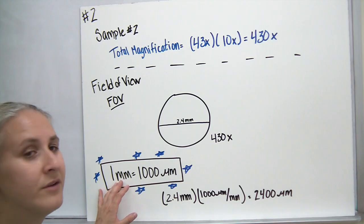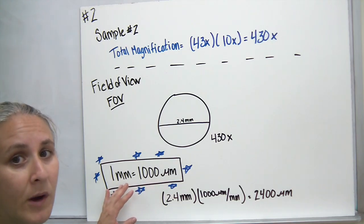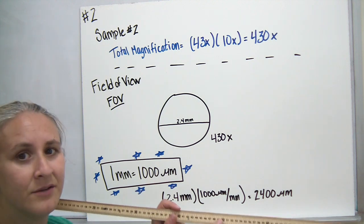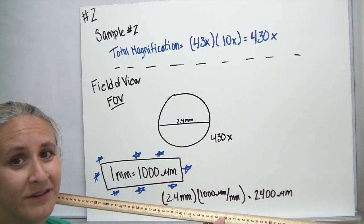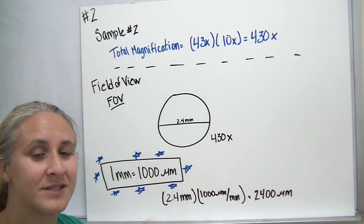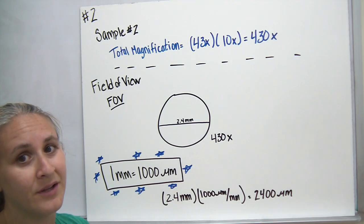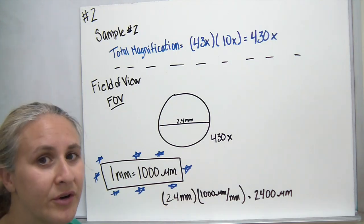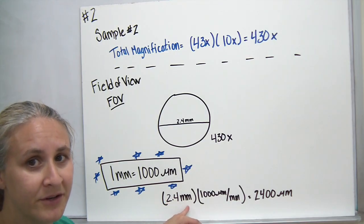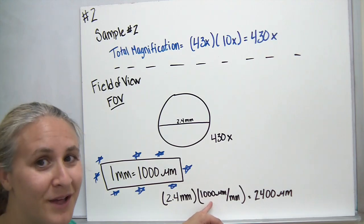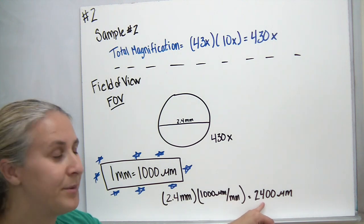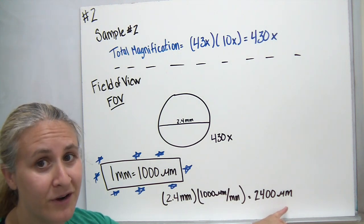Our conversion from millimeters to micrometers: for one millimeter, there are 1,000 micrometers. If you can imagine this ruler, the small lines in between are 1 millimeter, and in between those lines would be 1,000 marks to indicate micrometers — so it's a pretty tiny unit. For example, converting 2.4 millimeters to micrometers: multiply by 1,000, because there are 1,000 micrometers for every millimeter, and you end up with an answer of 2,400 micrometers.